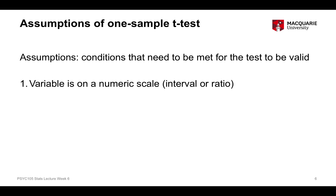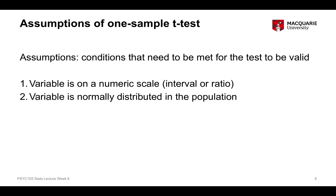The second assumption is that the variable is normally distributed in the population from which the sample was drawn. Because we only have sample data and not the entire population, we test this assumption by examining the distribution of data in our sample and checking if it is approximately normal. We use that sample distribution to reflect what we think the population distribution looks like.